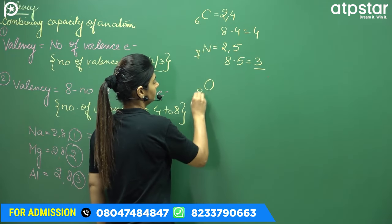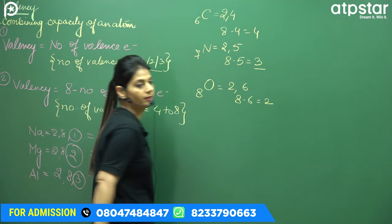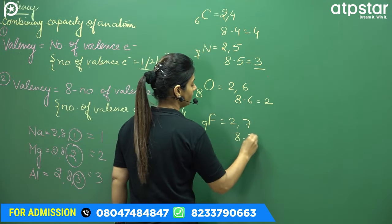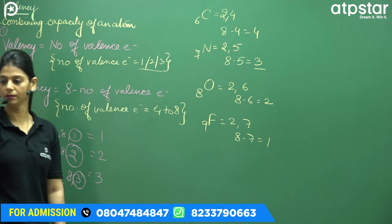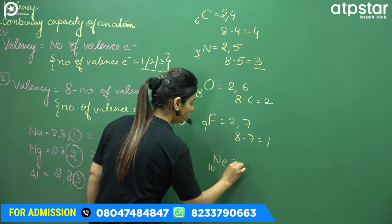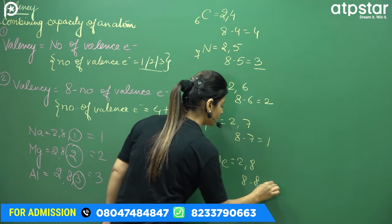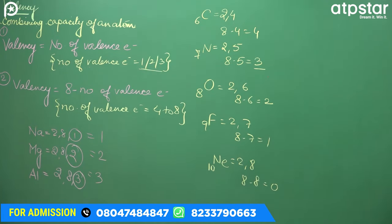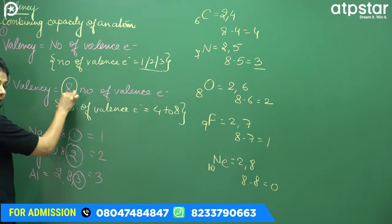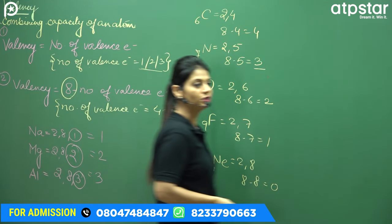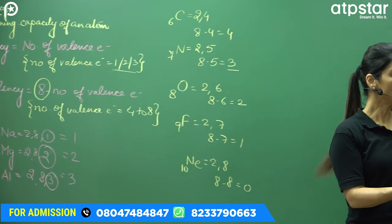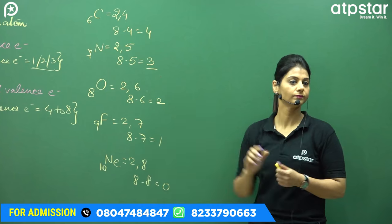Oxygen — configuration 2, 6. Valency = 8 − 6 = 2. It makes two bonds. Fluorine — 2, 7. Valency = 8 − 7 = 1. Neon — 2, 8. Valency = 8 − 8 = 0. It doesn't make any bond. So if there are 4 to 8 valence electrons, you subtract from 8 to get the valency. The reason is that to achieve noble gas configuration, the atom needs to fill up to 8 electrons, so it makes bonds accordingly.